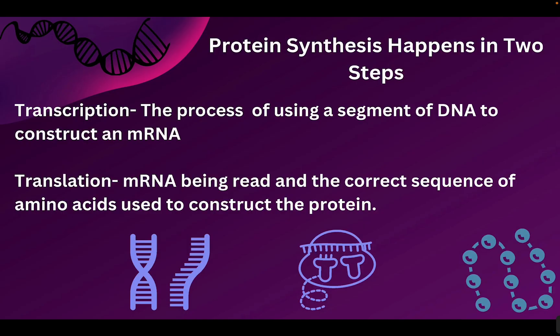Now that we know the players involved in the central dogma of protein synthesis, let's talk about how they all work together. Protein synthesis is a two-step process. The first step is called transcription, where we take that segment of DNA and make an mRNA. Translation is going to start with mRNA, read it, and build the amino acids into the correct sequence, making our protein. So we're going to start with going through the steps that happen in transcription.